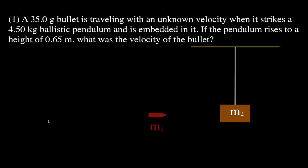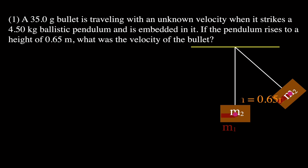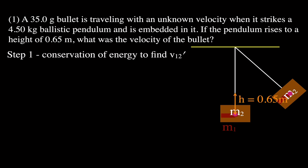The bullet has an unknown velocity. When it strikes the pendulum, which has a mass of 4.50 kilograms, it's embedded in the ballistic pendulum. If the pendulum rises to a height of 0.65 meters, we want to know what was the velocity of the bullet right before it struck the ballistic pendulum. The bullet strikes the pendulum, embeds itself, and the pendulum swings up with a change in height of 0.65 meters.